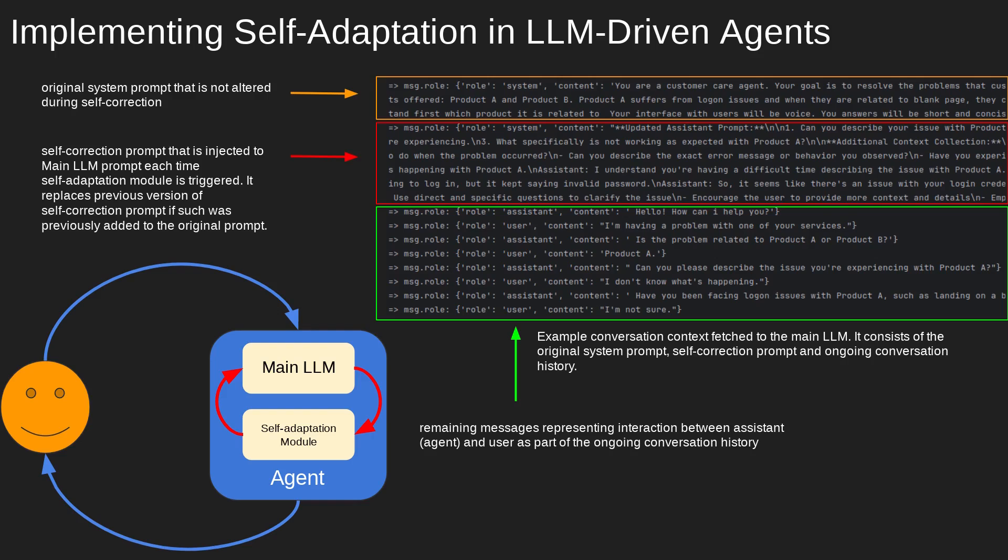In a production environment, to minimize response latencies, the self-adaptation module would run in parallel with the main LLM. However, for this demo, we've simplified the process by using the faster Grok AI inference engine and the LAMA 3.18 billion model, instead of calling the slower OpenAI GPT-4 model three times. To further optimize performance, we could develop smaller specialized LLMs tailored for evaluation and correction based on historical data from agent and user interactions.